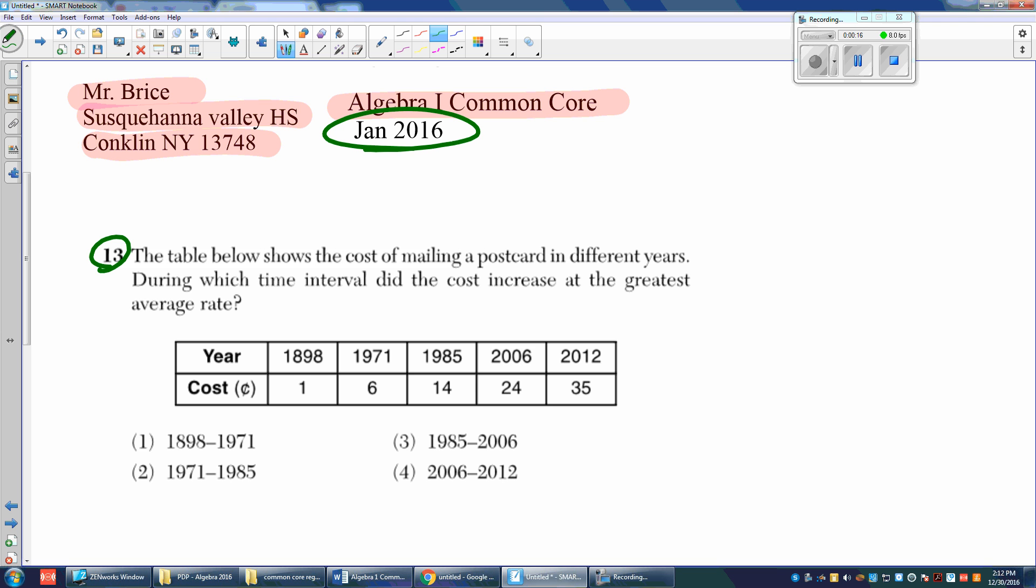We're starting with number 13 because we already had the previous 12 questions in two different videos, trying to keep the videos to 10 minutes. The table below shows the cost of mailing a postcard in different years. During which time interval did the cost increase at the greatest average rate? Whenever you see average rate, you should think delta Y over delta X, which means the change in Y over the change in X.